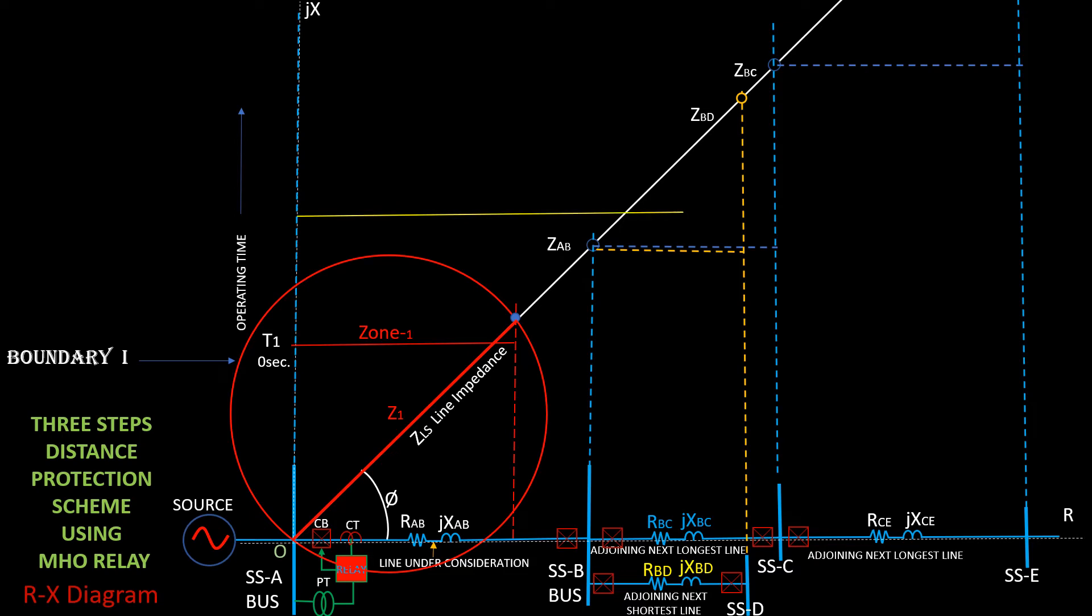Zone 2 protection is under the coverage of 100% of line between substation A and substation B plus 50% of adjoining shortest line, that is between substation B and substation D here.